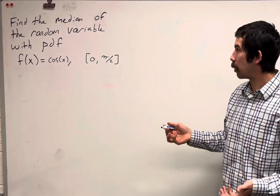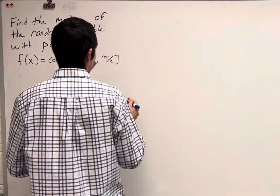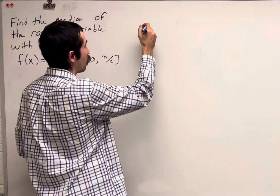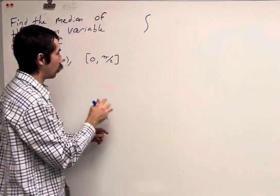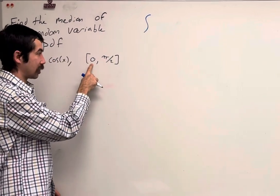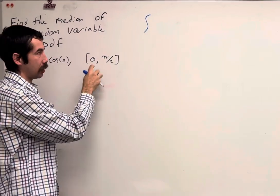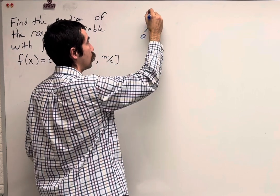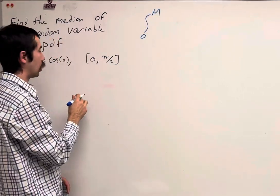Alright, so this is going to be really straightforward. To find the median, we want to find the value m such that the integral from, in this case 0, but whatever our lower bound is, to m of our function.